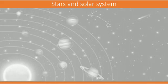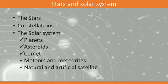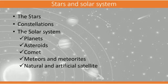The next topic is Stars and Solar System. In this chapter, we will discuss stars, a few constellations, and the solar system. Under the solar system, we will study about planets, asteroids, comets, meteors and meteorites, and natural and artificial satellites.